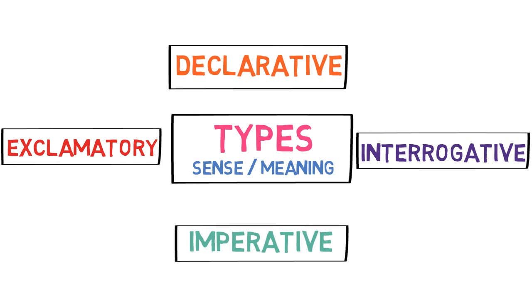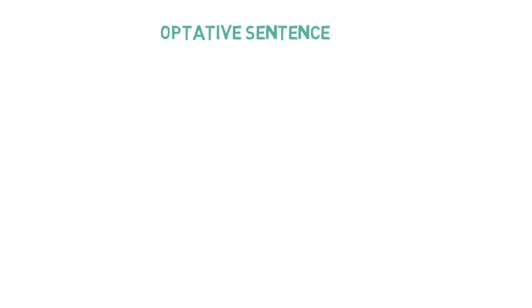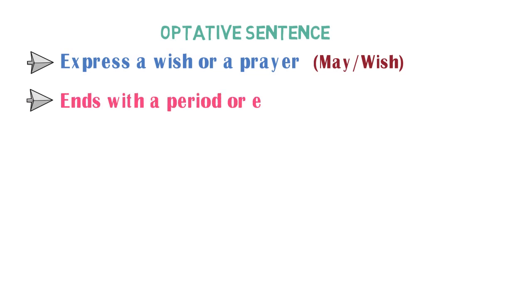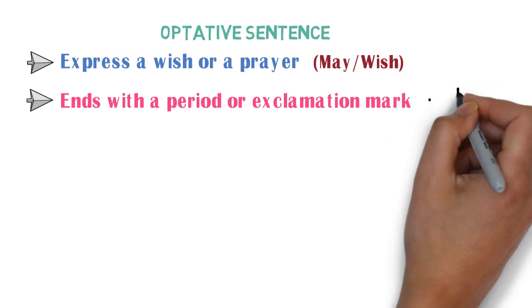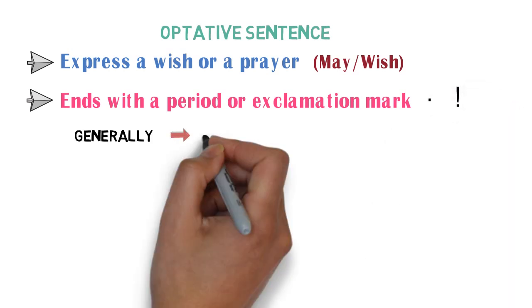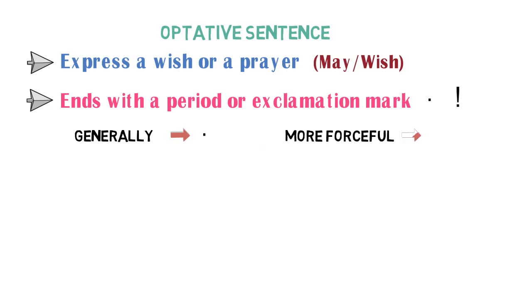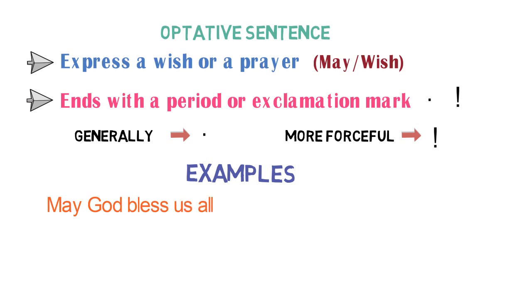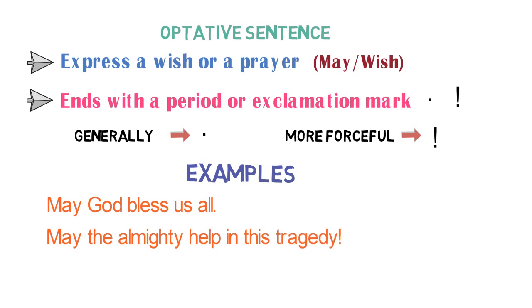Apart from the main four types, there is one more type of sentence not mentioned in this book but mentioned in many modern grammar books. It is called an optative sentence. It is used to express a wish or a prayer, and it generally starts with 'may' or 'wish.' It ends with a period or exclamation mark depending on how forcefully the sentence is said. Examples include: 'May God bless us all.' and 'May the Almighty help in this tragedy!' Notice that as the second sentence is said forcefully, an exclamation mark is used.